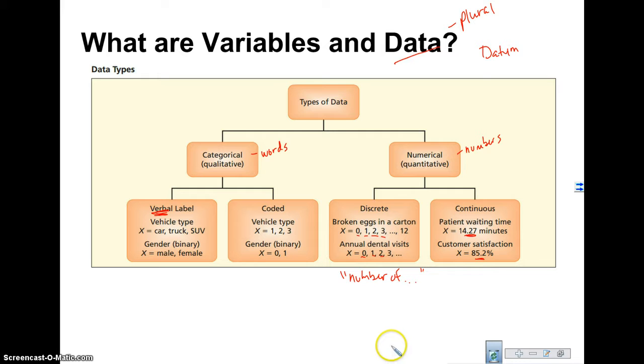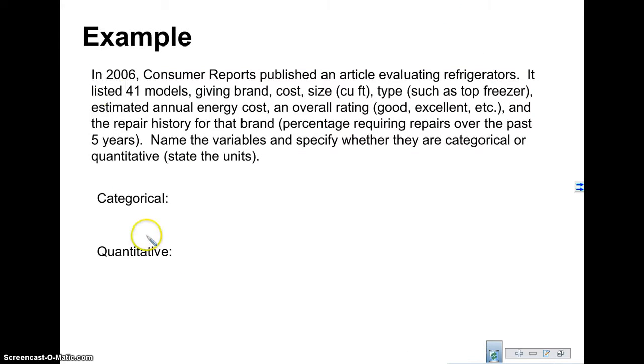Let's take a look and see if we can identify some variables and the units of measure in a problem here. In 2006, Consumer Reports published an article evaluating refrigerators. It listed 41 models giving brand, cost, size, type, estimated annual energy cost, an overall rating, and the repair history for that brand. And this was given in percentage requiring repairs over the past five years. Name the variables and specify whether it's categorical or quantitative. So the variables are the characteristics that we are looking for in our who. And our who here is the 41 models of refrigerators that we're evaluating.